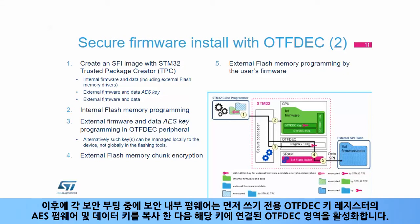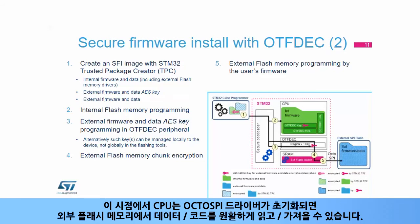Afterward, during each secure boot, the secure internal firmware first copies the AES firmware and data keys into the OTF-DEC key registers, then activates the OTF-DEC region tied to those keys. At this point, the CPU can seamlessly read or fetch data or code from external flash memory once the OctoSPI driver has been initialized.